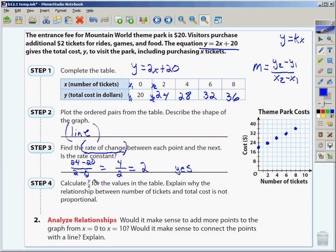Step 4 says, calculate y over x. Well, 20 divided by 0 is undefined. 24 divided by 2 is 12. Did it stay the same? No. Is this proportional? No.